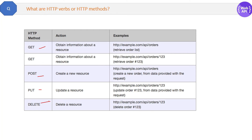These are the HTTP verbs or methods we have in our WebAPIs. First, GET is used to get the information of a resource. In the example, 'orders' is the resource and it will get the whole orders list. Second is another version: if you want not the whole list but one particular item, you pass a parameter with the orders URL. So that is how you retrieve one record only, for example order number 123.